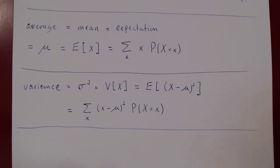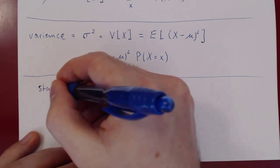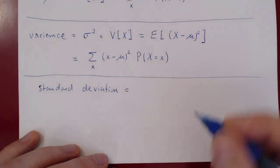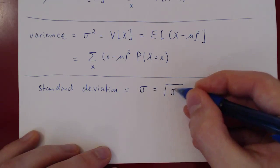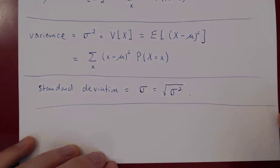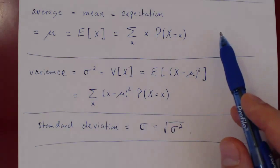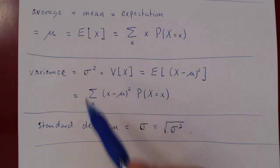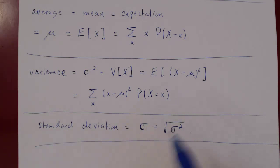Finally, we have the standard deviation. If sigma-squared is the variance, the standard deviation is simply sigma — just the square root of the variance. Those three quantities are the key quantities for every random variable: the mean, the variance, and the standard deviation. Because the variance is squared it is artificially larger, and by taking the square root we get the standard deviation, which is a more reasonable measure of variability.